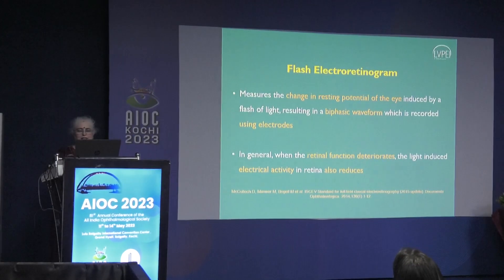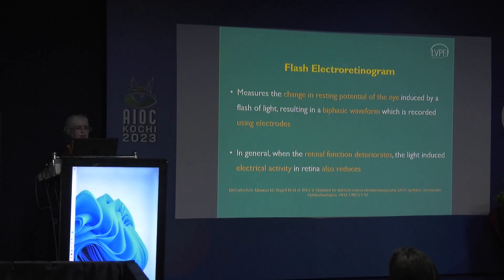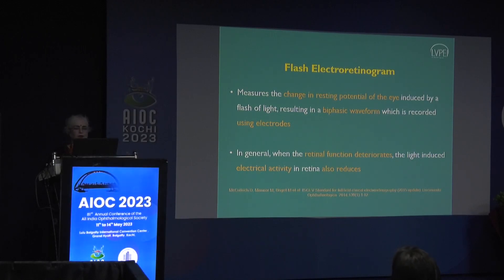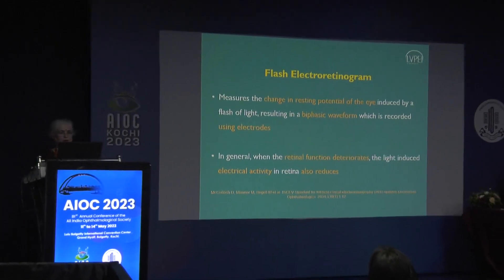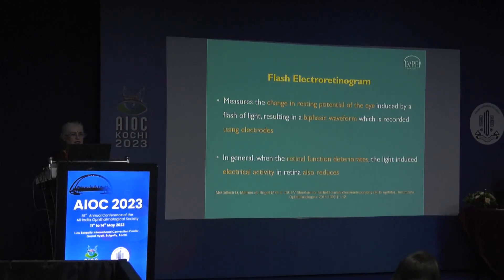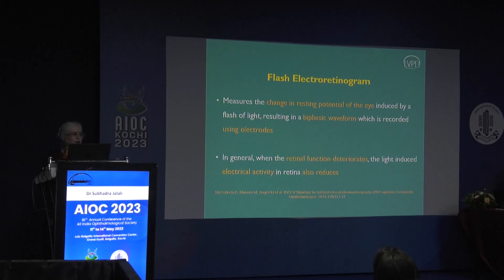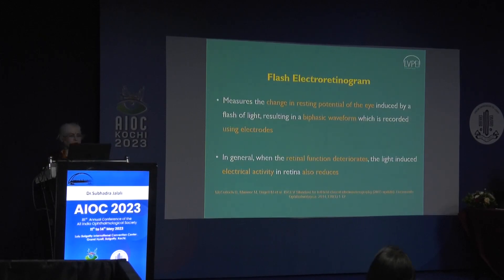The flash electroretinogram measures the change in the resting potential of the eye induced by a flash of light, resulting in a biphasic waveform recorded using electrodes. As retinal function deteriorates and cells stop functioning, this electrical activity reduces substantially. If normal is 300, it won't become 220 or 250 — it will come down to less than 50. This substantial response makes it a robust technique for studying visual functions using electrophysiology.